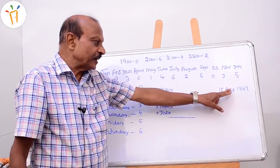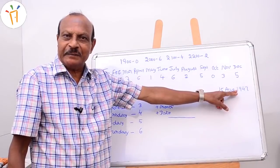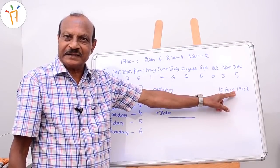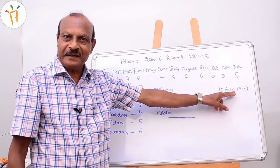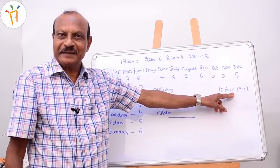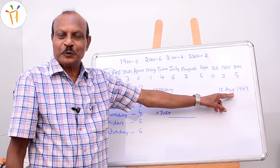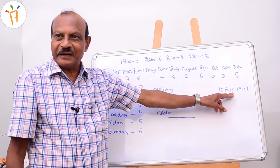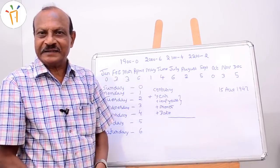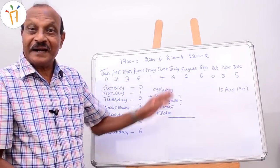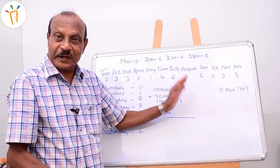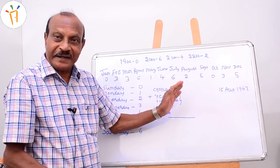Take 15th August 1947, our Independence Day. Everybody knows this date, month, and year. But do you know which day we got independence? Everybody says they don't know the day on which we got independence. Let us calculate the day on which we got independence.